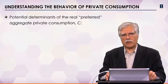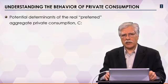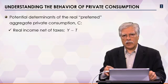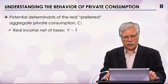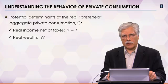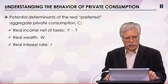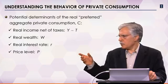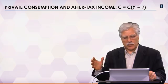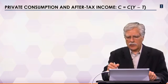The next variable we're going to focus on is private consumption — the preferred private consumption, how much consumers would like to spend given their circumstances. This should depend on a host of variables. The first variable that probably drives private consumption is after-tax income, or what we call in economics disposable income. Wealth is another variable that should affect one's consumption decision. Interest rates and price level might also be important. Let's focus on private consumption as a function of after-tax income.